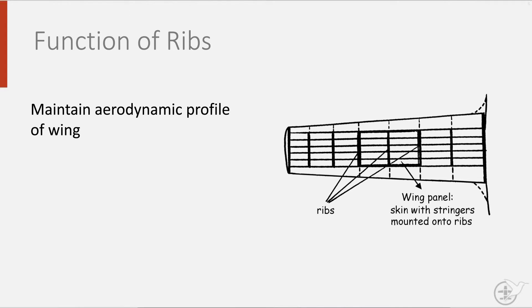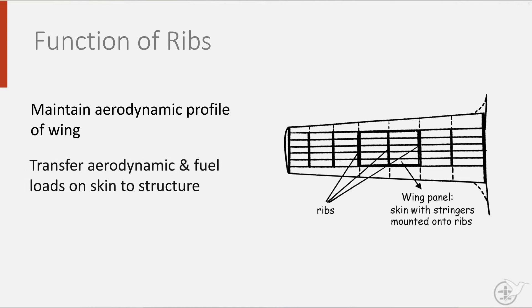As an aerodynamic profile is defined in flight direction, ribs are often placed in flight direction also, even though sometimes it is easier from a manufacturing point of view to place them perpendicular to the spars. Secondly, they also transfer the aerodynamic and fuel load exerted on the skin into the rest of the wing structure.